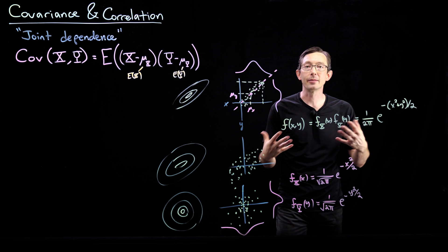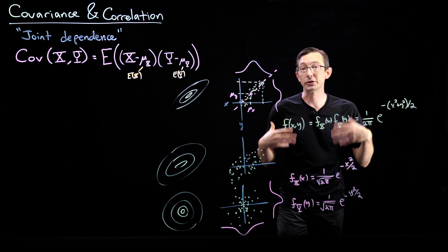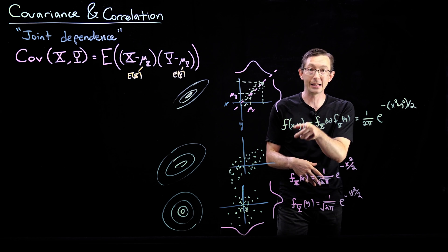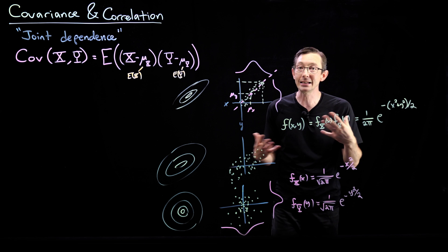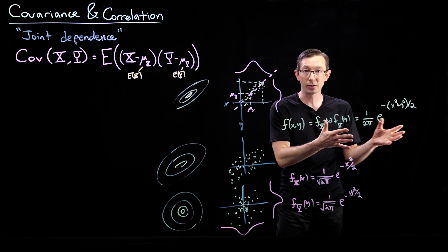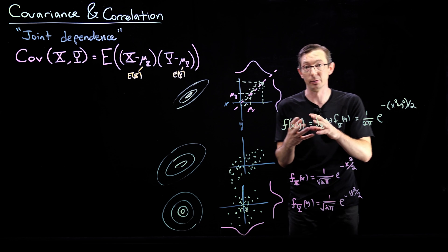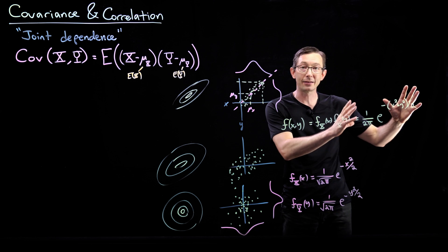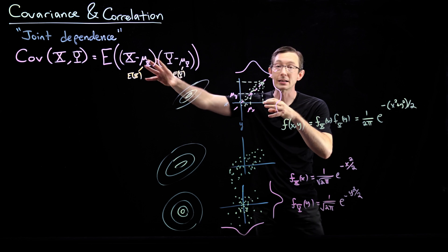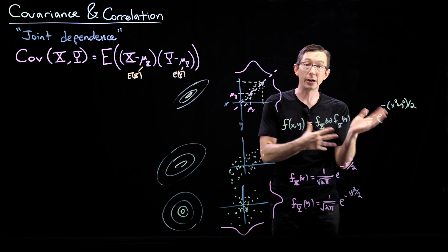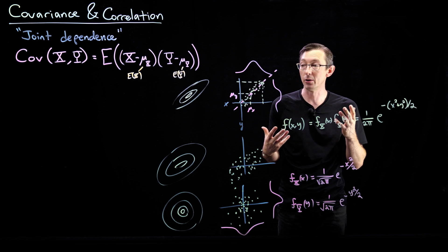And this works in higher dimensions. I can have a three-dimensional multivariate Gaussian with x and y and z. I can have an nd multivariate Gaussian with a bunch of independent variables. And I will get a formula like this. And I can still quantify notions of covariance and correlation between the various components.